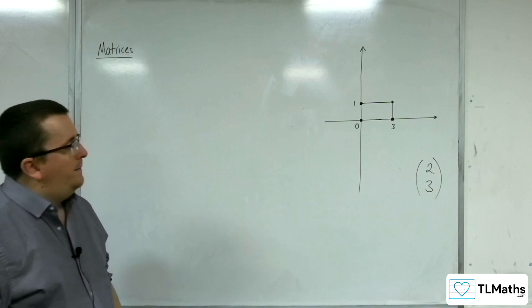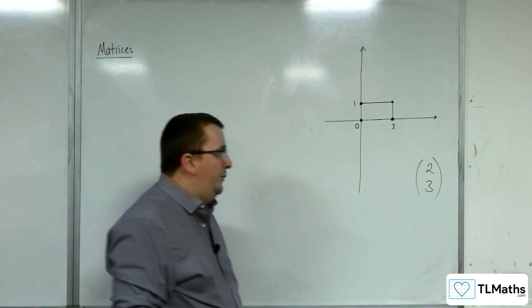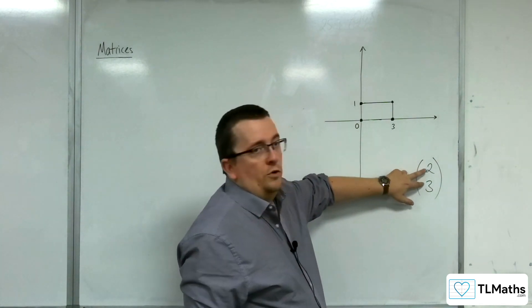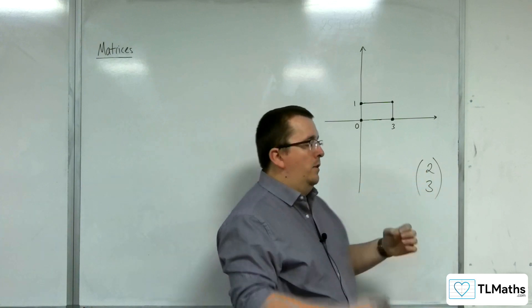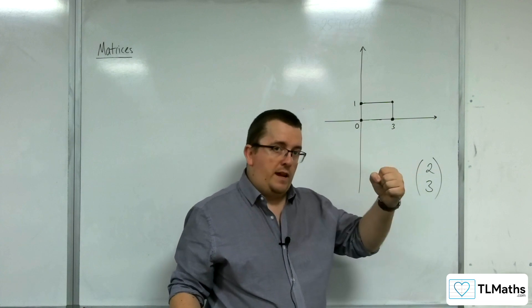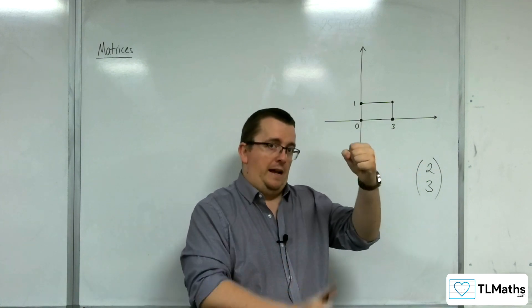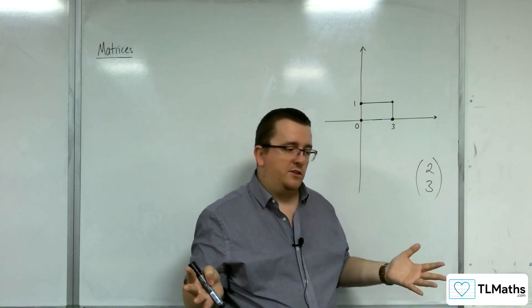And you could think of that as a position vector of the coordinate 2, 3. How do you get from the origin to the coordinate 2, 3? Well, you've got to go 2 along and then 3 up. That's what a vector is describing.